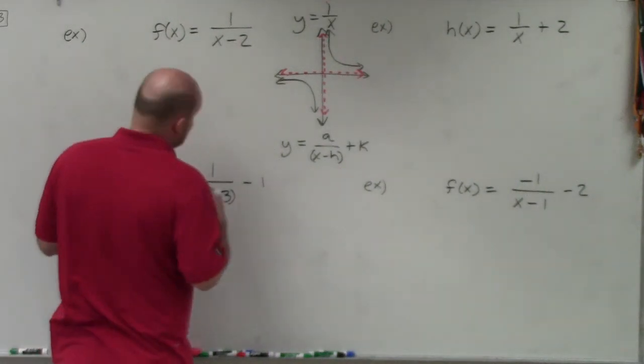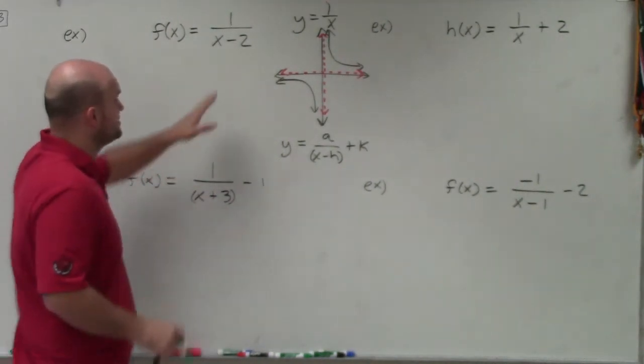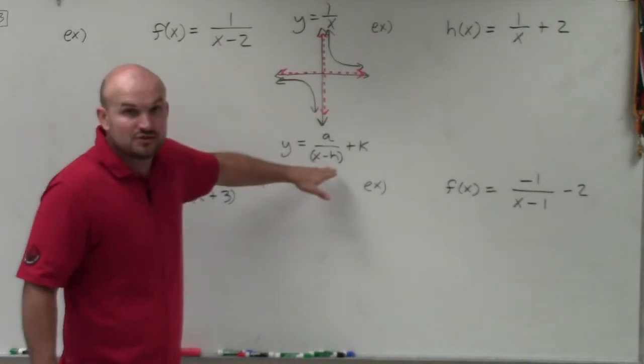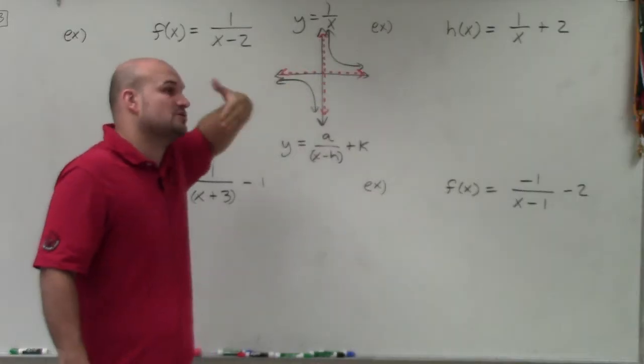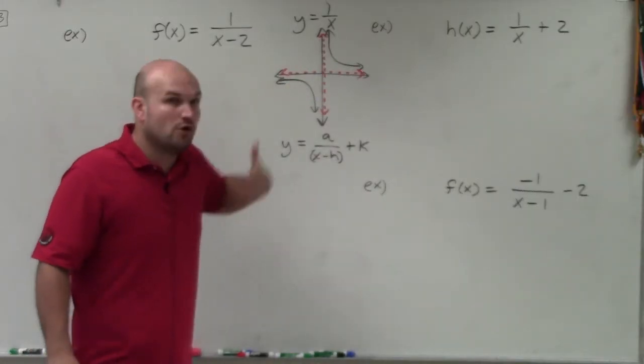But basically, we just want to remind ourselves, what exactly are the transformations that's going on? So the best thing I like to do when I'm graphing is identify the transformations. Now, remember, it's x minus h, right? So x minus h. So what's the value of h? h's value is positive 2. So you're actually going to be shifting the graph over two units to the right.